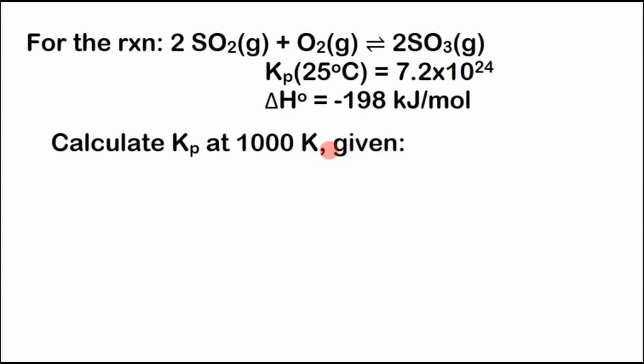We don't really need this given, so let's go from here. Now we're going to start off with the Van't Hoff equation. So ln(K2/K1) equals negative ΔH° over R times (1/T2 minus 1/T1), just like that.